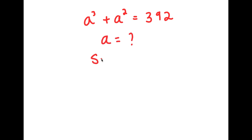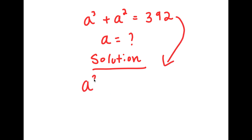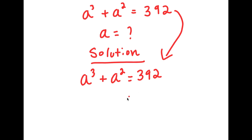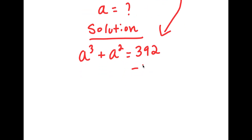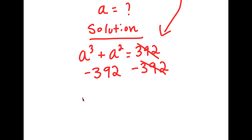For my solution, I'm going to first start by rewriting my equation here. So I get a to the power of 3 plus a squared is equal to 392. And now I'm going to subtract 392 on both sides. So these two cancel out, and this turns into a to the power of 3 plus a squared minus 392 is equal to zero.